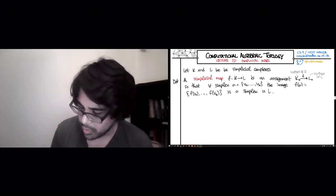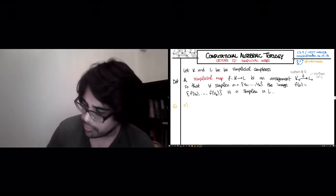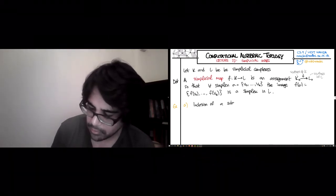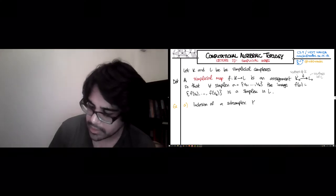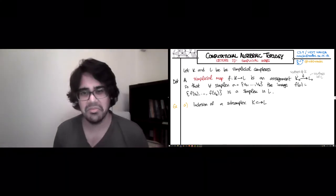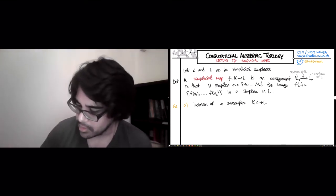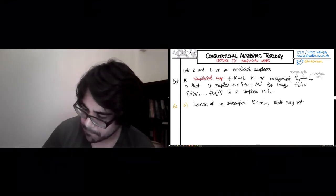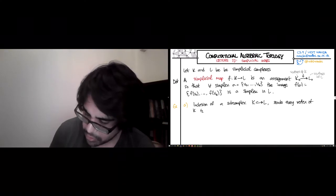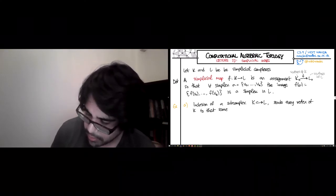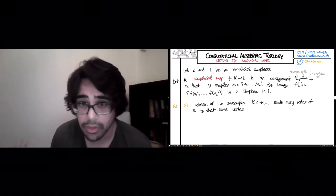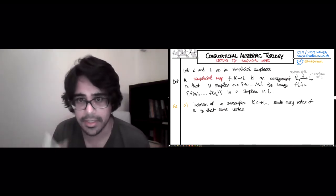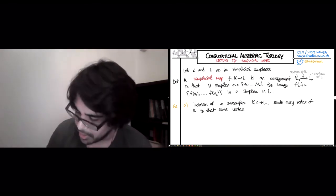It's good to see examples as quickly as possible. The first one is the inclusion of a subcomplex. So if K is a subcomplex of L, then you write the inclusion map with this hooked arrow. It sends every vertex of K to that same vertex in L. Remember that the vertices of L include the vertices of K. Every simplex of K ends up being a simplex of L, and that's what this map does.